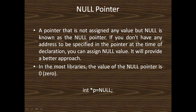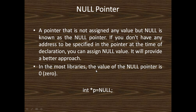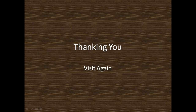Now I describe the null pointer. When you declare an integer pointer and it is not assigned any value, the value of that pointer by default is null. A pointer that is not assigned any value but null is known as the null pointer. If you don't have any address to be specified in the pointer at the time of declaration, we can assign null value. In most libraries the value of the null pointer is zero. The formal definition of the null pointer is: int *p = NULL.